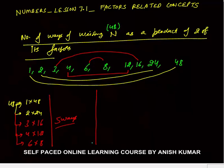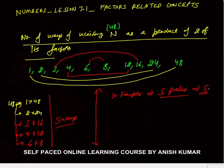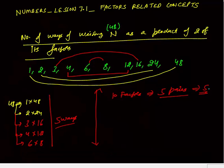The logic is: total factors are 10, so we can form 10/2 = 5 pairs (first–last, second–second last, etc.), each with product 48. So the number of ways to write 48 as a product of two of its factors is total factors ÷ 2 = 5. No need to memorize a formula — it's simply pairing factors symmetrically.